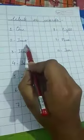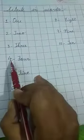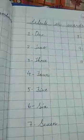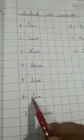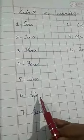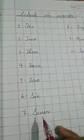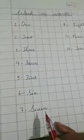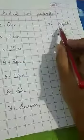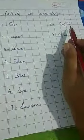1. O-N-E. 2. T-W-O. 3. T-H-R-E-E. 4. F-O-U-R. 5. F-I-V-E. 6. S-I-X. 7. S-E-V-E-N. 8. E-I-G-H-T.